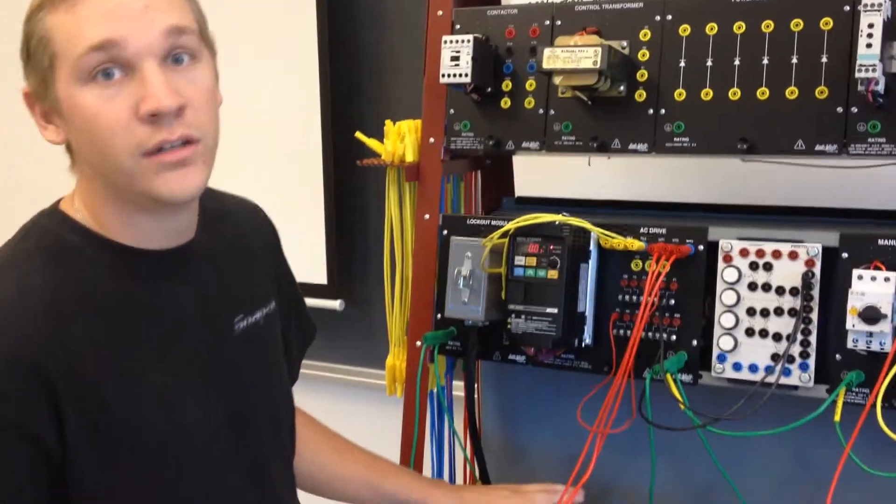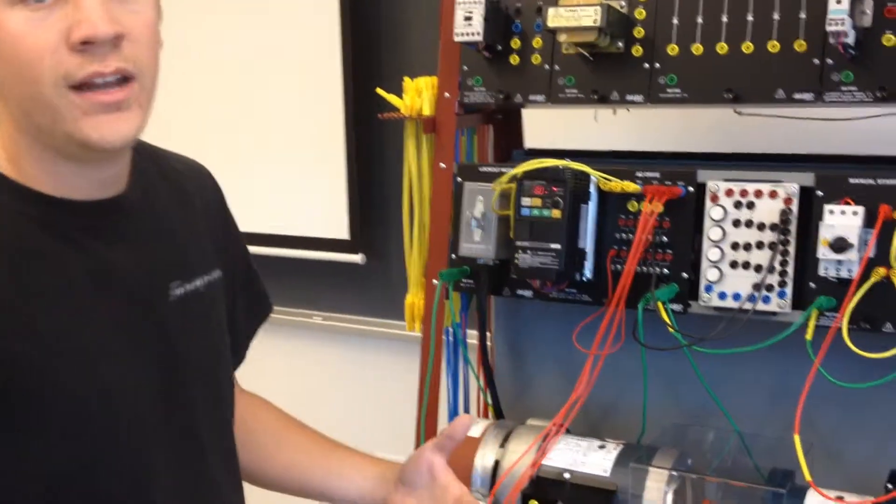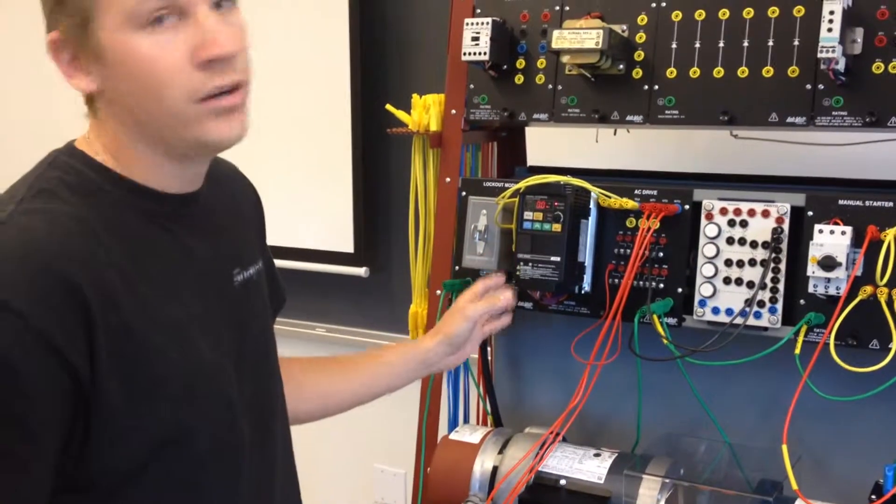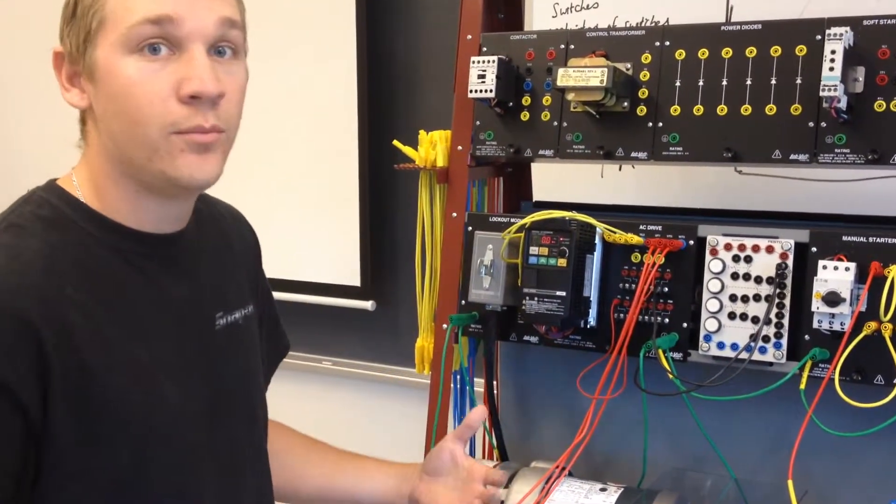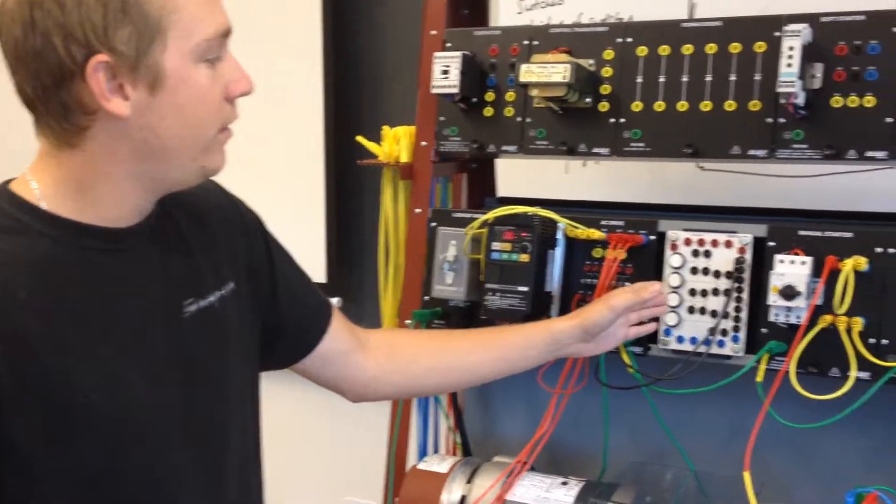When the motor is running currently, it will draw 0.9 amps. Our overcurrent protection is set at 1 amp, so once the current reaches 1 amp or higher, it will illuminate this light over here.